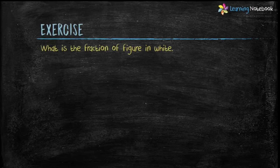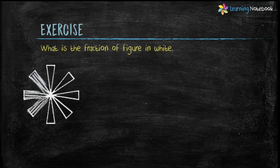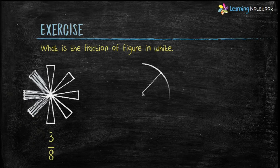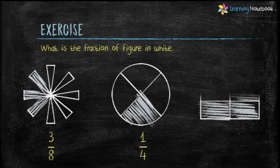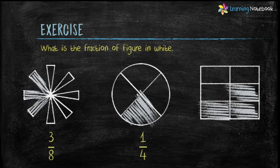Question number 2 is: what is the fraction of figure in white? Look at the first shape. Here, number of white parts are 3 and total number of parts are 8. Therefore, fraction of white part is 3 by 8. Now look at the second shape. Here, number of white parts is 1 and total number of parts are 4. So fraction of white part is 1 by 4. Let's take a look at the last figure. Here, number of white parts are 3 and total number of parts are 6. Therefore, fraction of white part is 3 by 6.